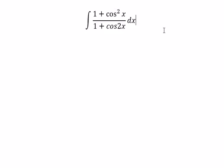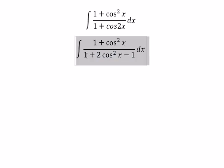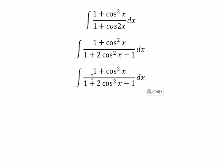We use the identity cosine 2x equals 2 cosine squared x minus 1. The ones will cancel.